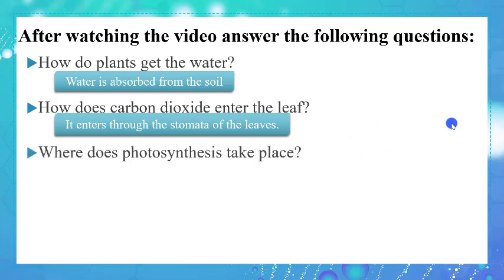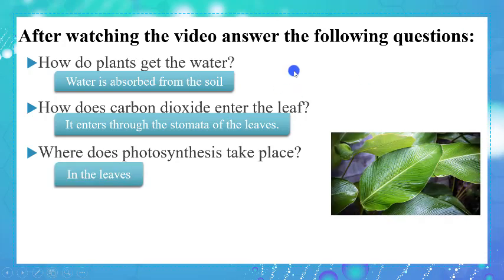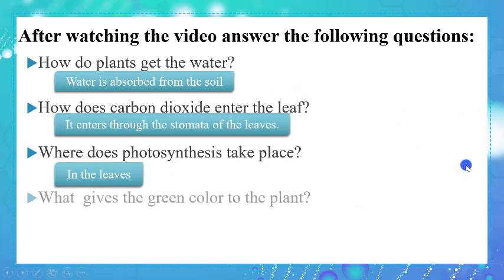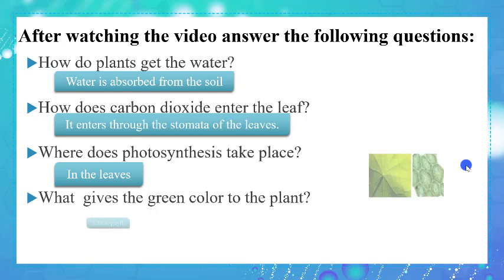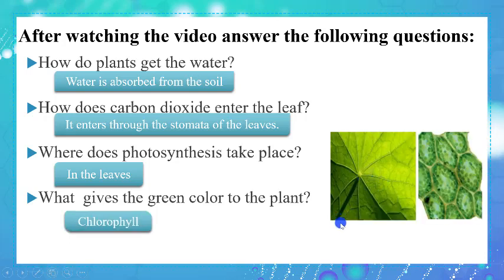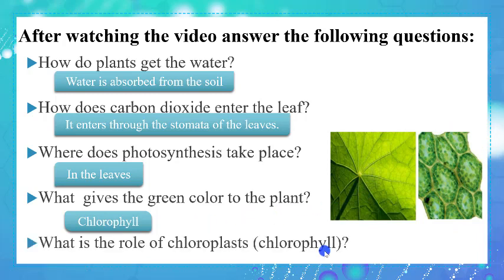Where does photosynthesis take place? It happens in the leaves of the plant. What gives the green color to the plant? Chlorophyll. Plants contain chlorophyll that gives them the green color. What is the role of chlorophyll? It captures light energy, which means it absorbs the light energy.